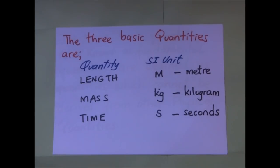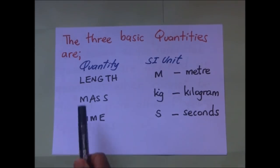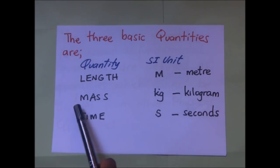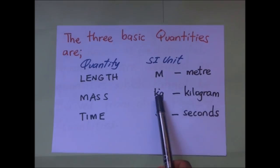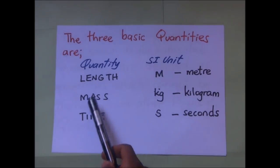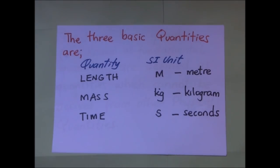All measurements in physics, even of things such as density and area, are related to three basic quantities: length, mass, and time. The SI unit for length is the meter (m), for mass is the kilogram (kg), and for time is the second (s). There are also other basic quantities including the ampere (SI unit for electricity), temperature in Kelvin, and amount of substance in moles.